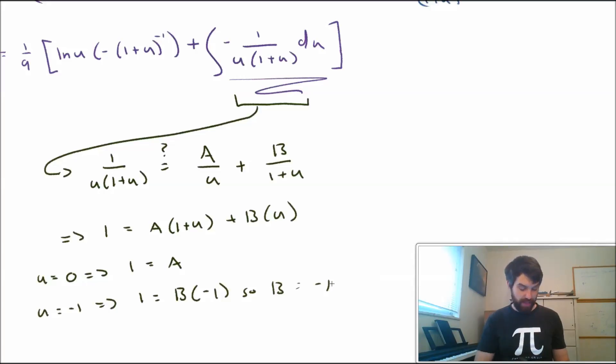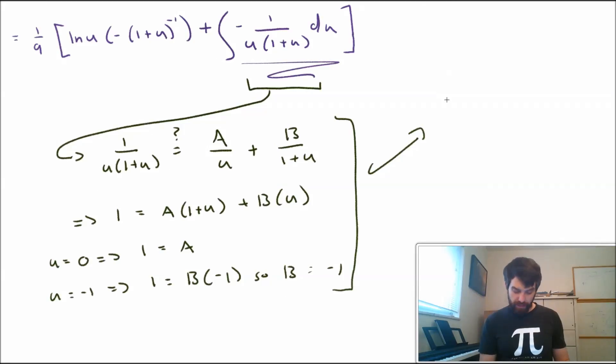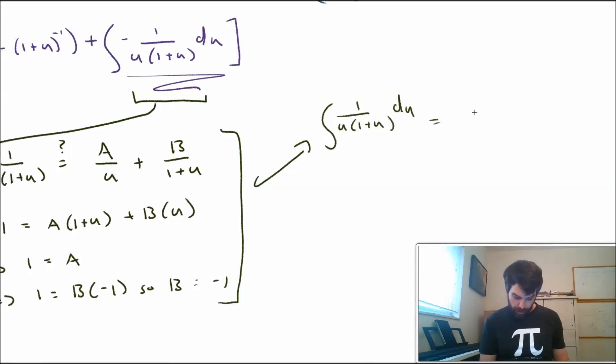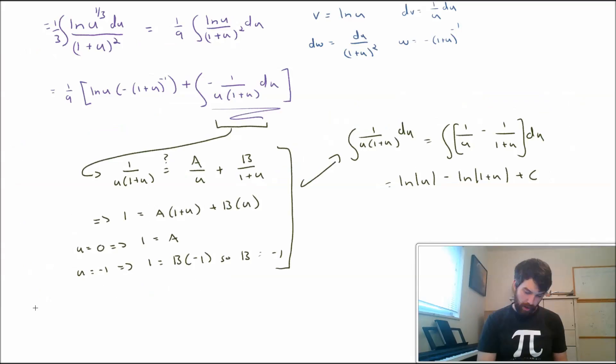In other words, if I'm going to take this little bit that I have here, I can now figure out what this integral is going to be. So this algebra is going to allow me to replace the integral of 1 over u times 1 plus u du with the integral of 1 divided by u minus 1 divided by 1 plus u du.